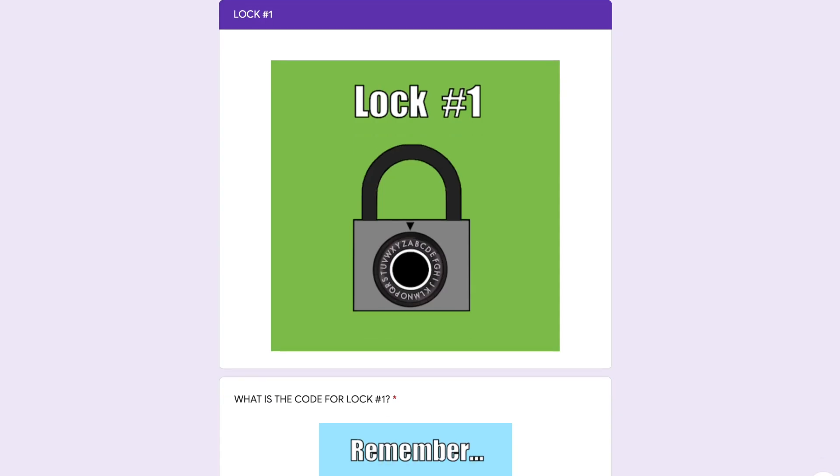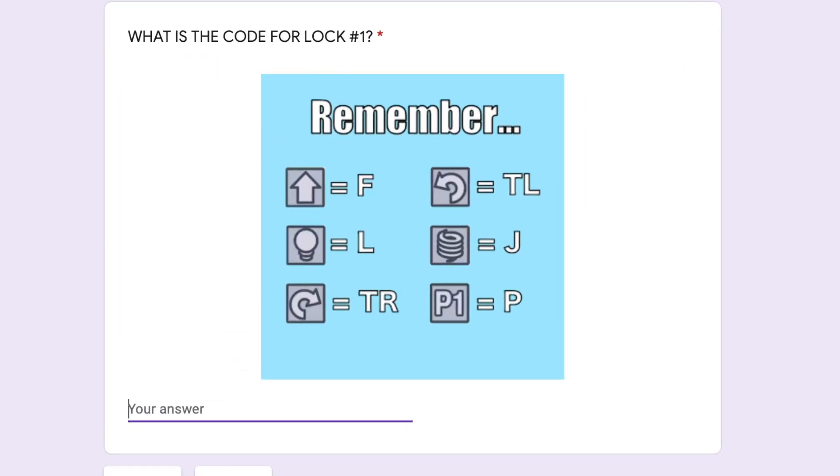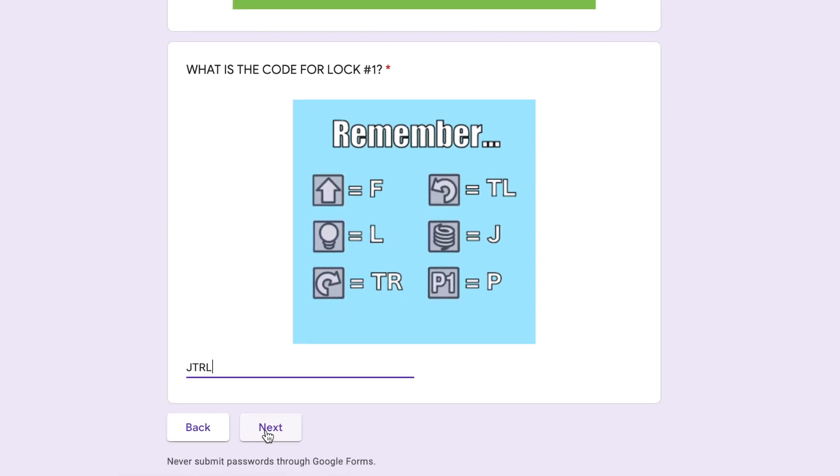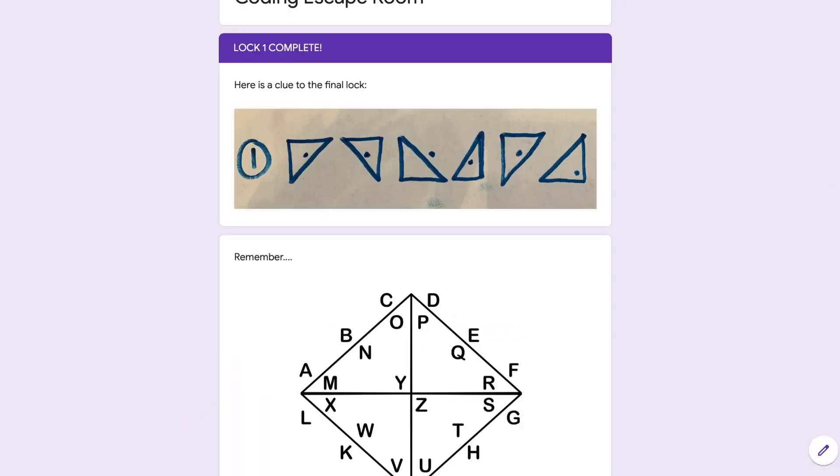To put this combination into the lock I'm going to type the first letter of each command into the answer space like this. J for jump, TR for turn right, and L for light. I'm going to use all capitals with no spaces and voila I unlock the first lock.